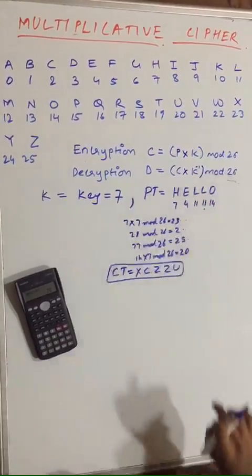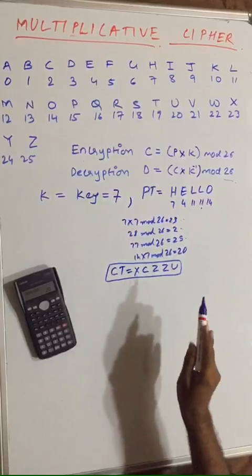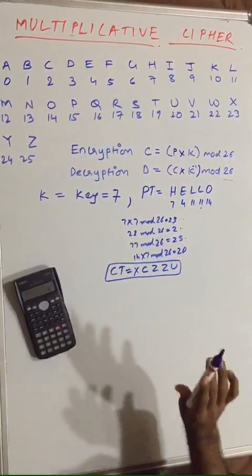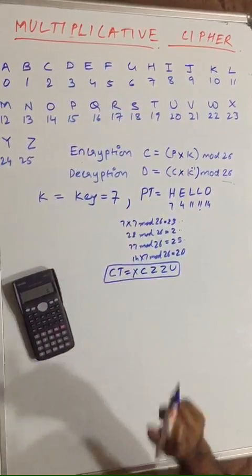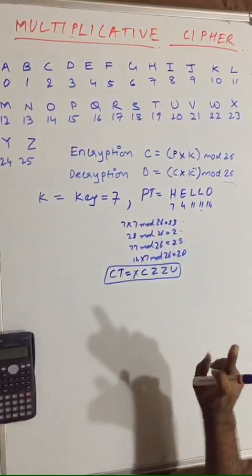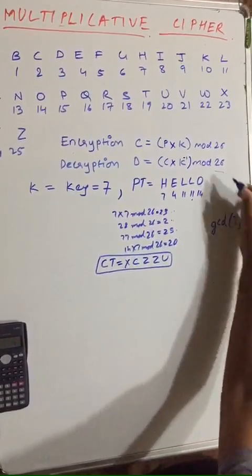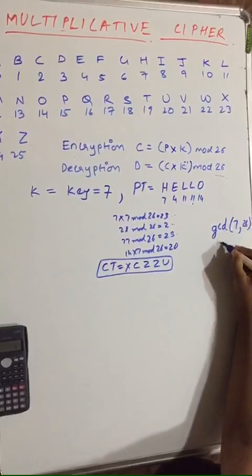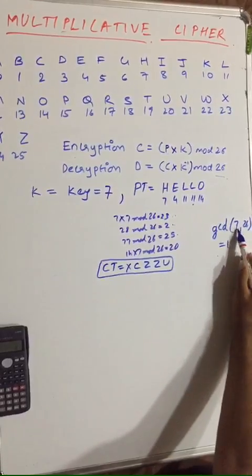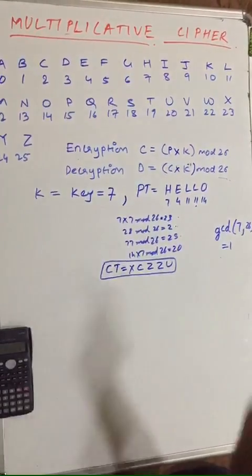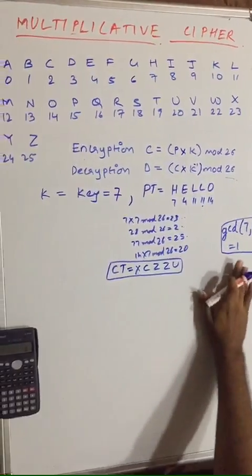As taught in the previous lecture on multiplicative inverse, we first check whether the multiplicative inverse of 7 is possible or not. Using the Euclidean algorithm, if gcd(7, 26) = 1, then the multiplicative inverse of 7 exists. Since gcd(7, 26) = 1, the multiplicative inverse of 7 is possible.